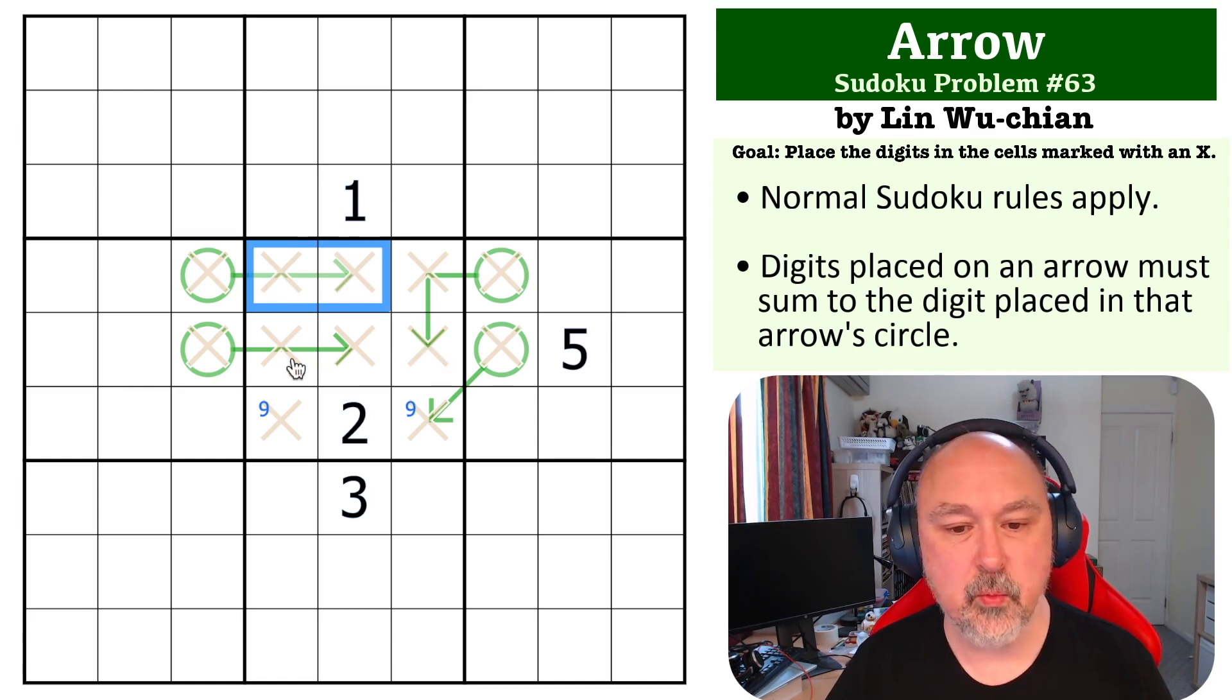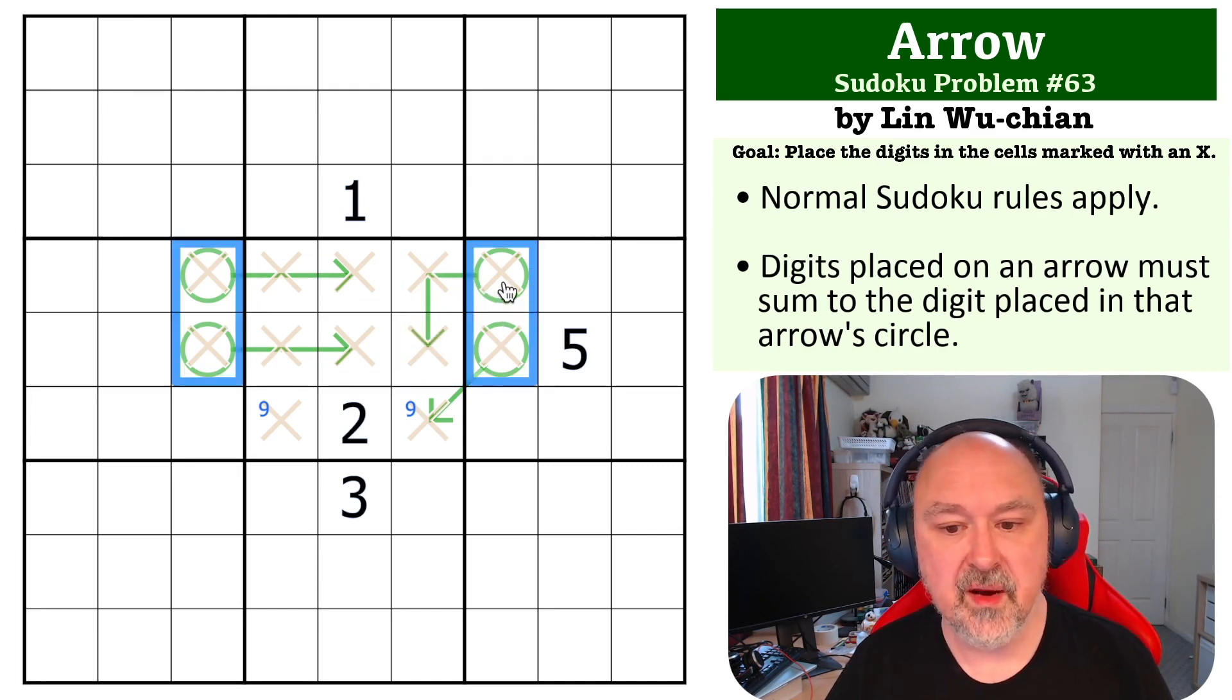What you need to do is actually look at what are the totals that these could be. The maximum that these could sum to is 17 if this is eight and nine. The maximum this could sum to is nine, or the maximum these could sum to is eight and nine. The maximum you could make this sum to is nine.